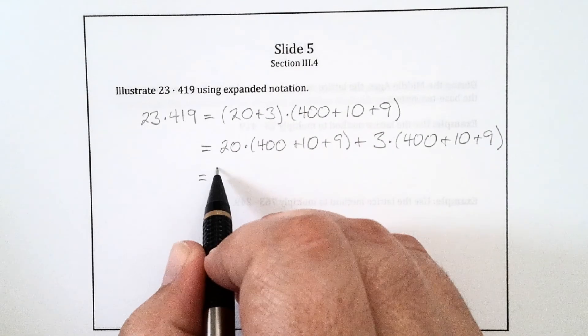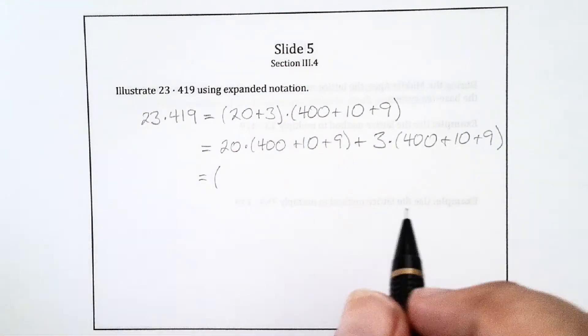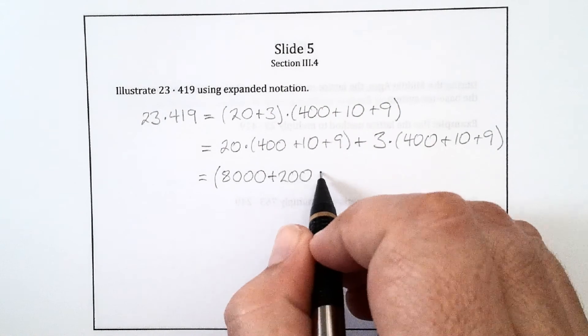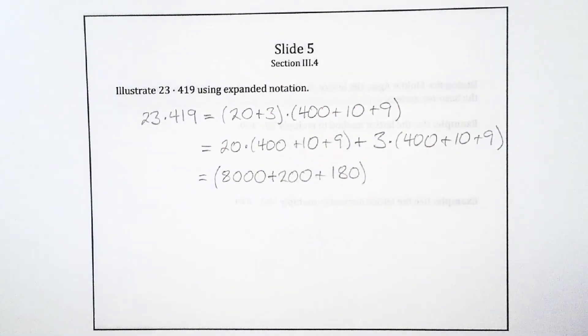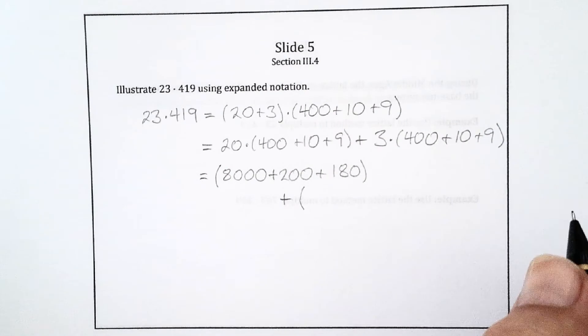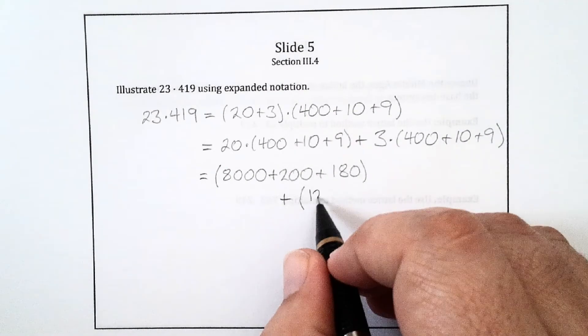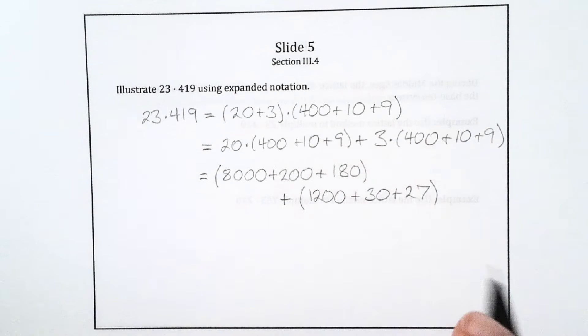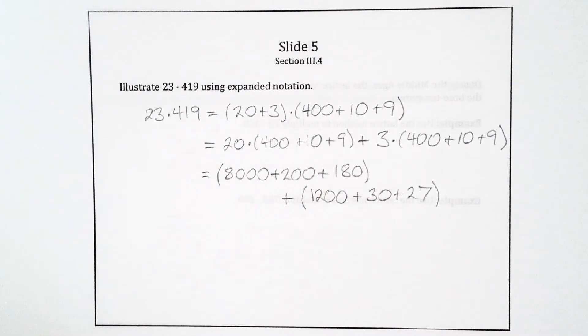The first three products after I distribute the 20 are 8,000 plus 200 plus 180. And then I distribute the 3, and the last three products are going to be 1,200 plus 30 plus 27. And the point of doing this is that the six products that I performed were all fairly easy. It's just a product of one-digit numbers plus some power of 10, so it just had some zeros tacked on at the end basically.